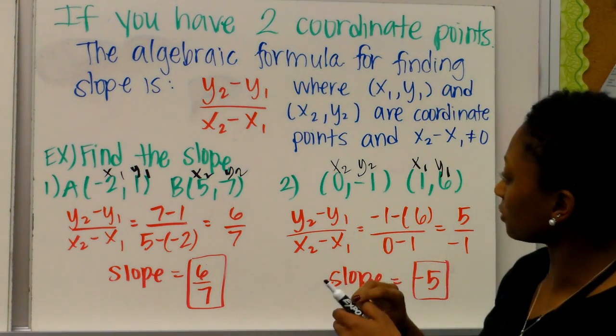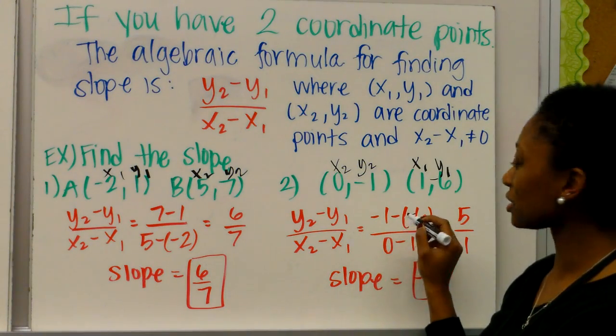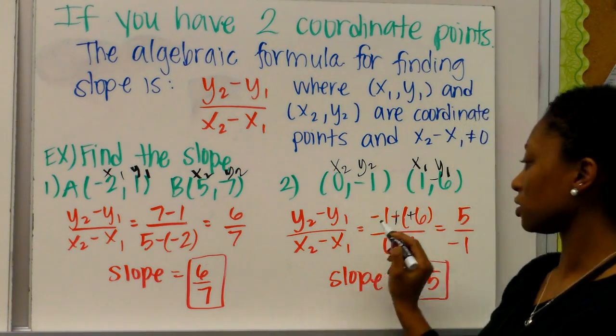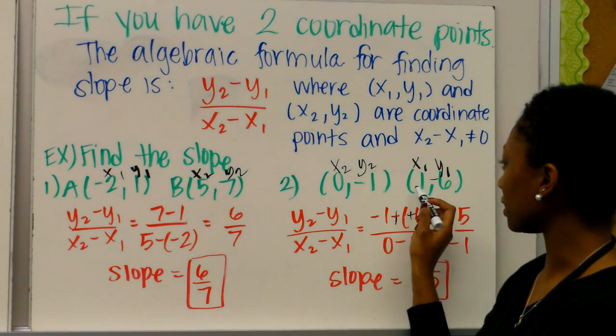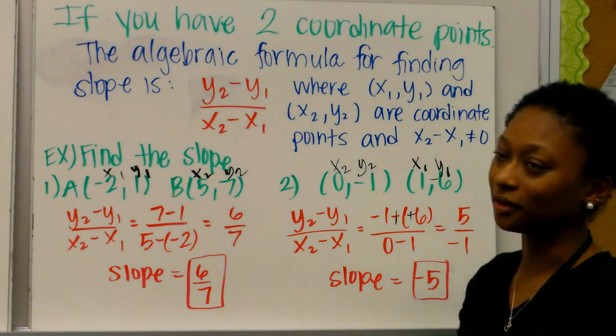So I have 1 minus 6, or maybe this should be negative actually. So 1 minus a negative 6 makes that turns that into a positive. So you have 1 plus 6, that's 7. And then 0 minus 1, that's going to be negative 1. So my slope is negative 7.